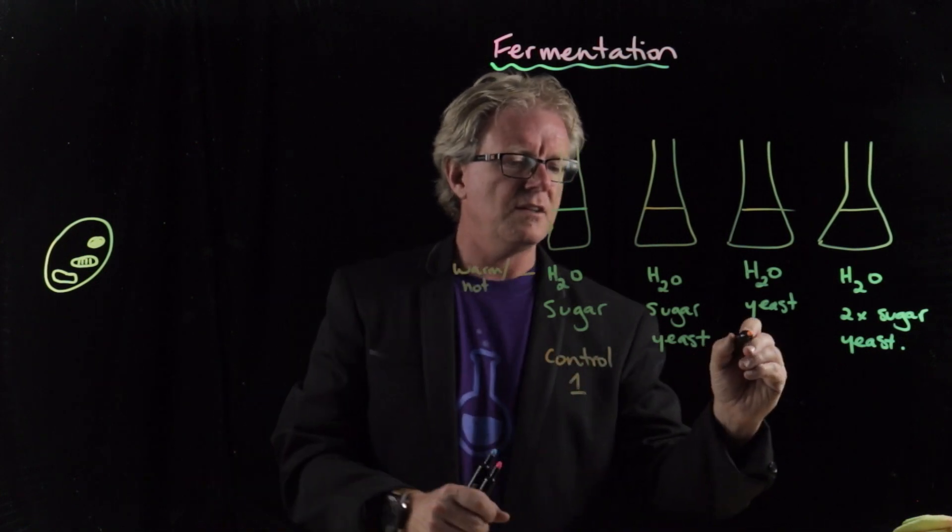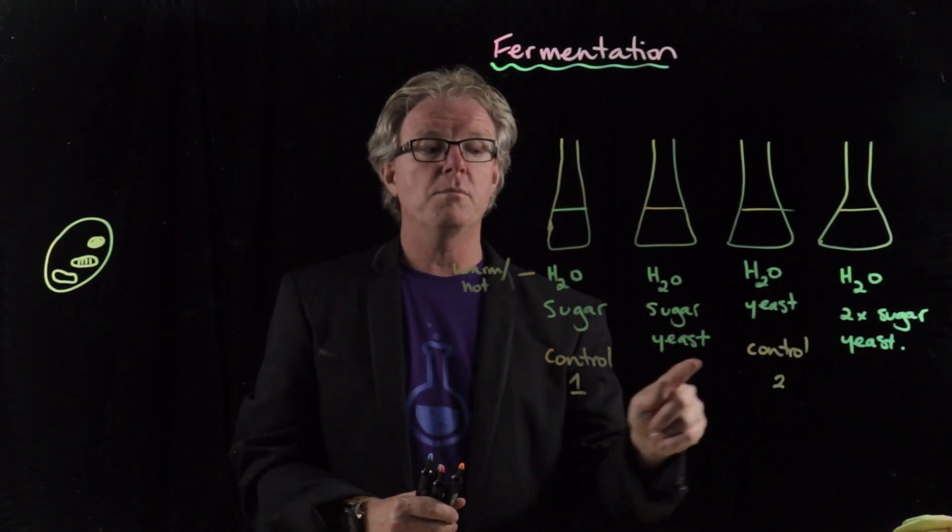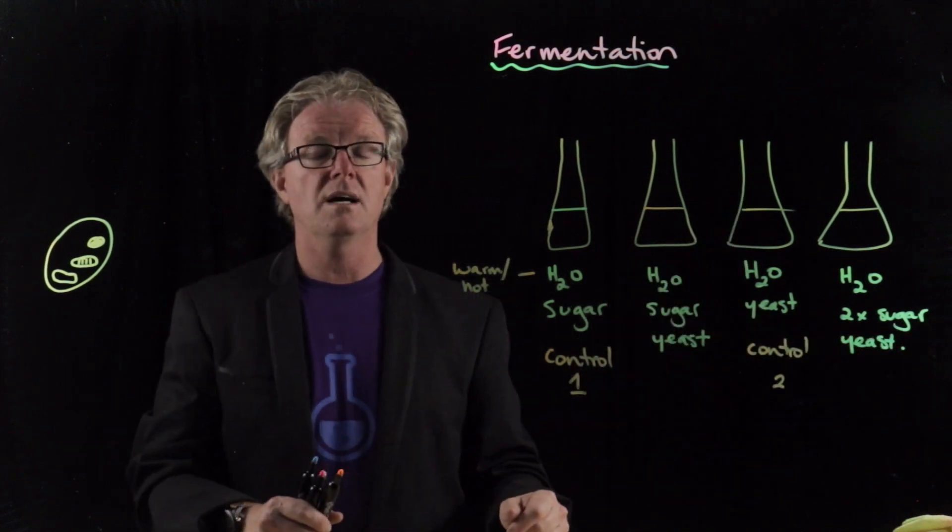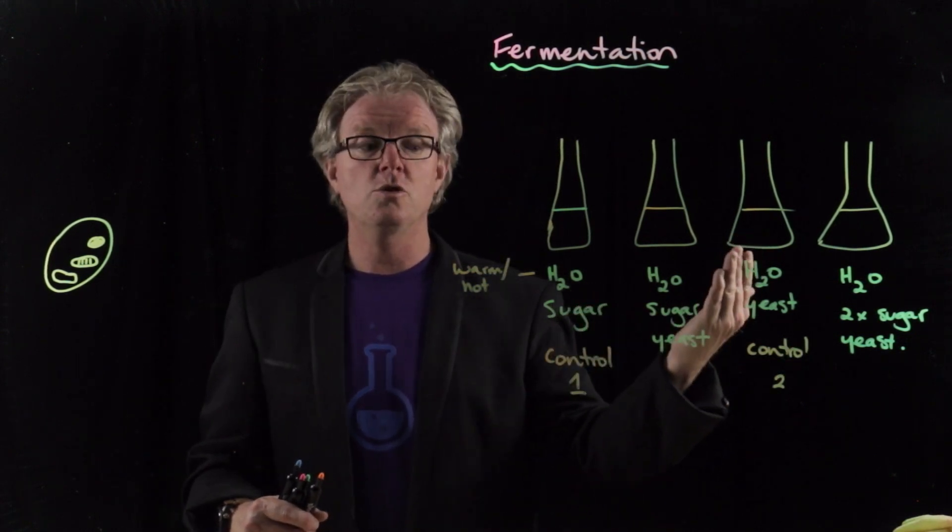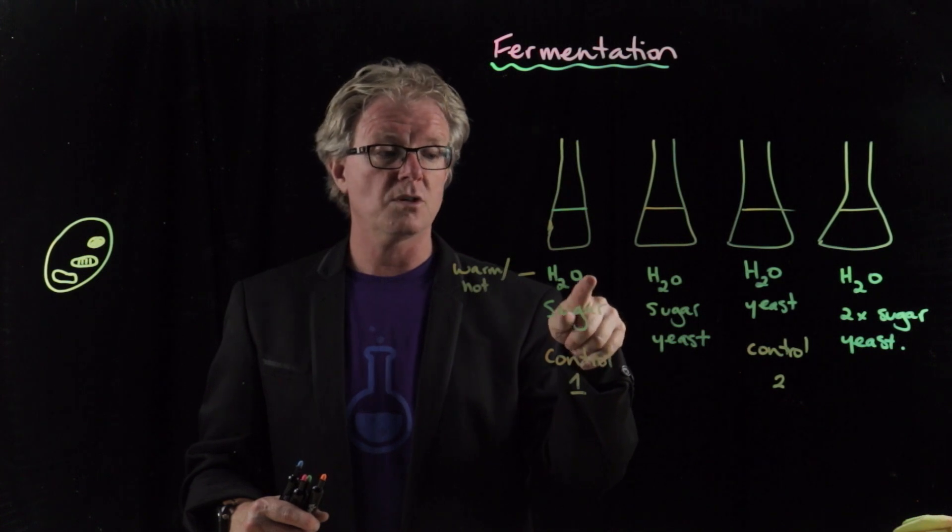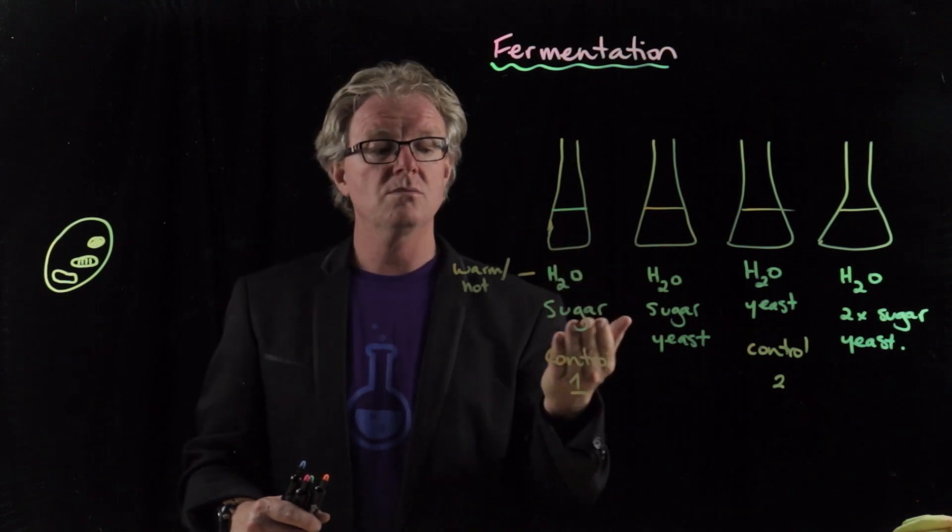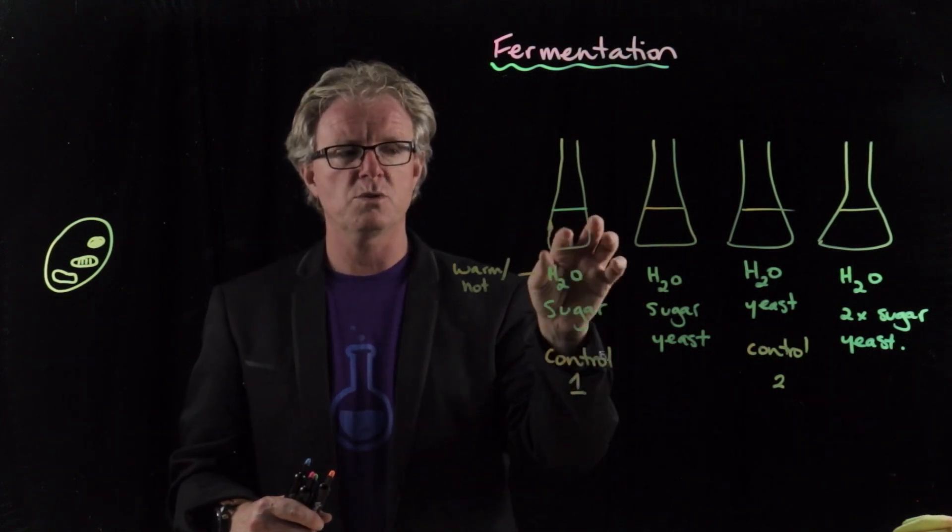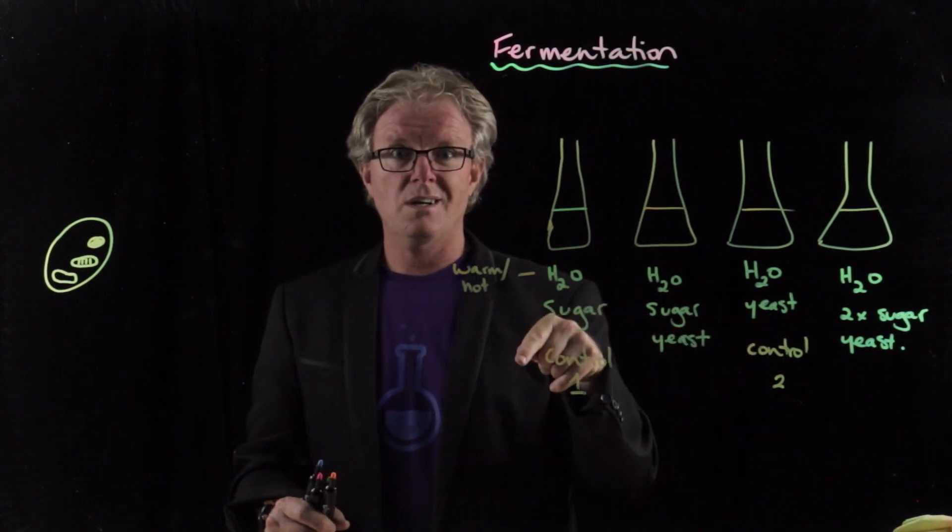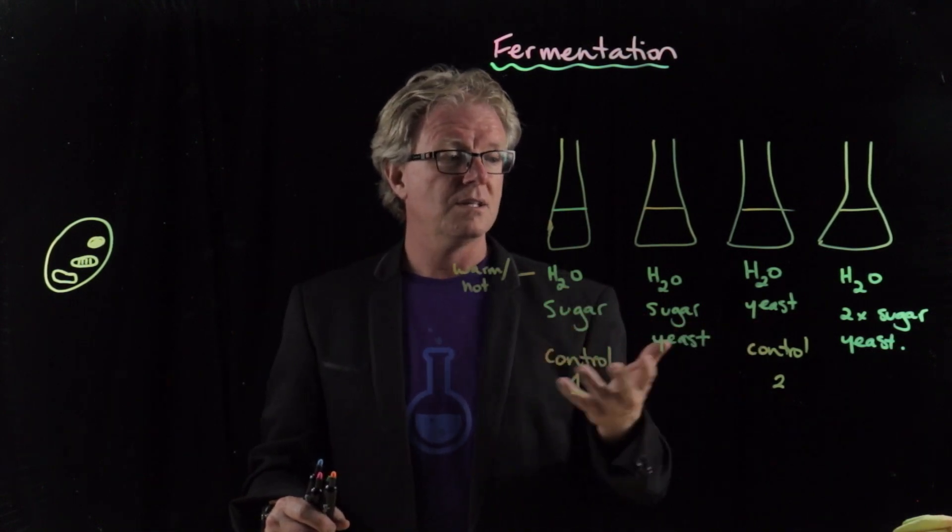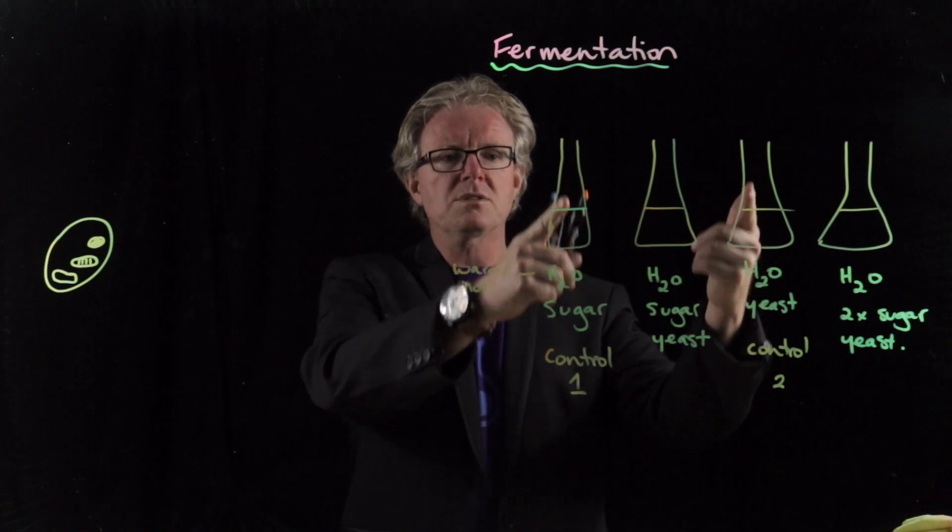And so this one here is a control. This is control number one and this is control number two. And then we're changing the independent variable here is the amount of sugar to see how it affects the CO2 production. So why have we got two controls? Well, we want to make sure that any CO2 produced is not affected by the water, right? So we've got water and we've got sugar. And we're showing here that it's the enzyme that's needed to ferment the sugar. The water doesn't ferment it by itself. So we should expect nothing happening in there.